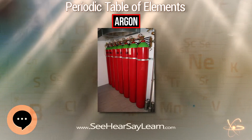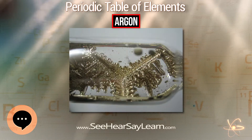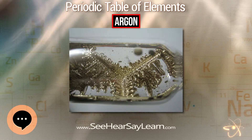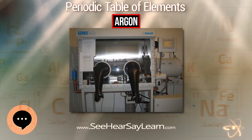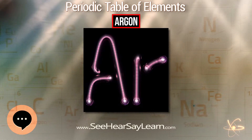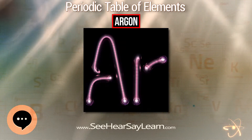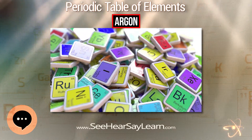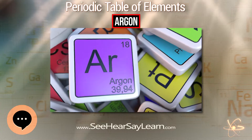Nearly all of the argon in the Earth's atmosphere is radiogenic argon-40, derived from the decay of potassium-40 in the Earth's crust. In the universe, argon-36 is by far the most common argon isotope, as it is the most easily produced by stellar nucleosynthesis and supernovas.